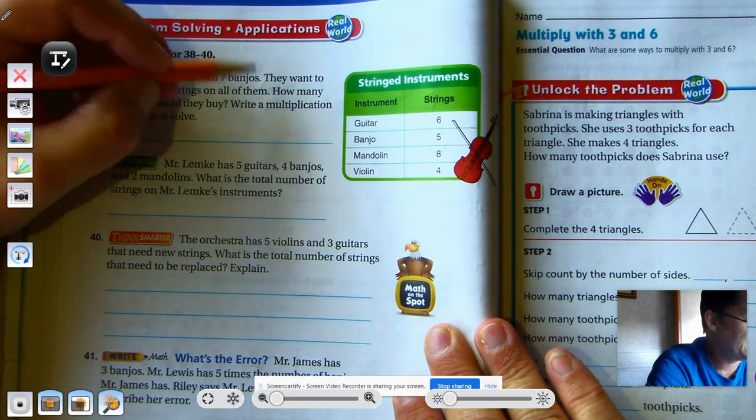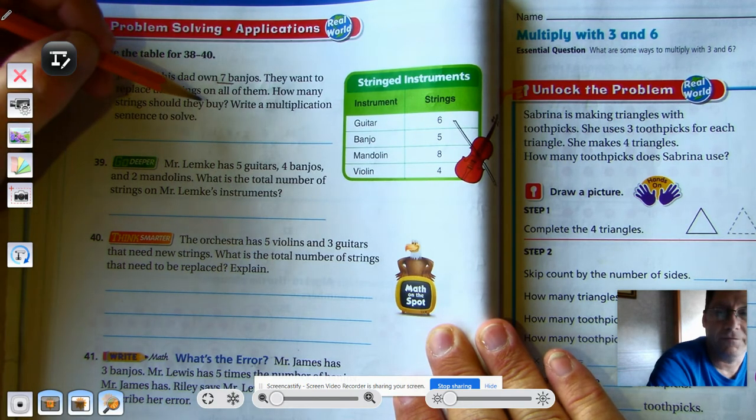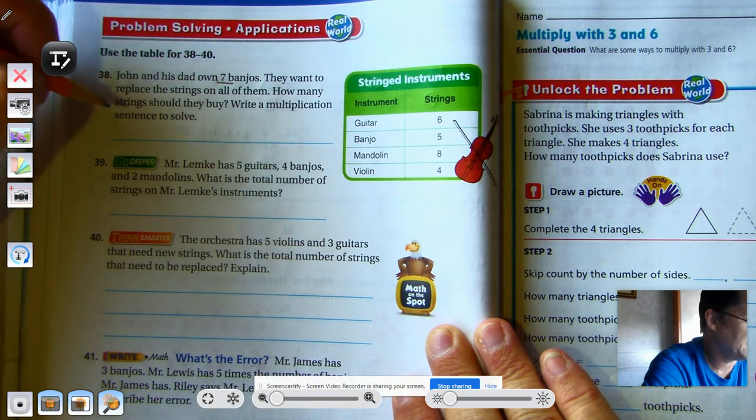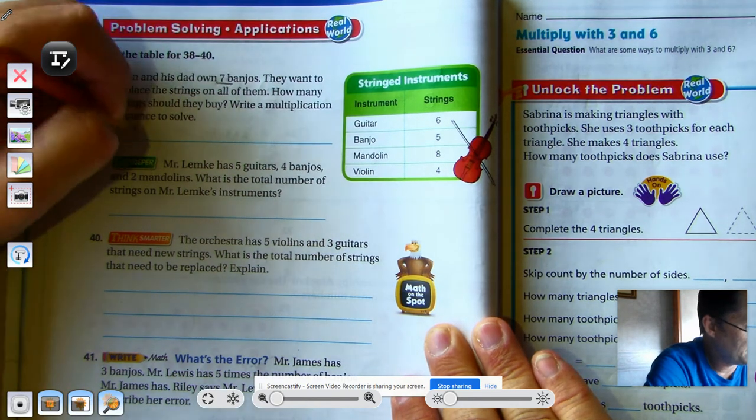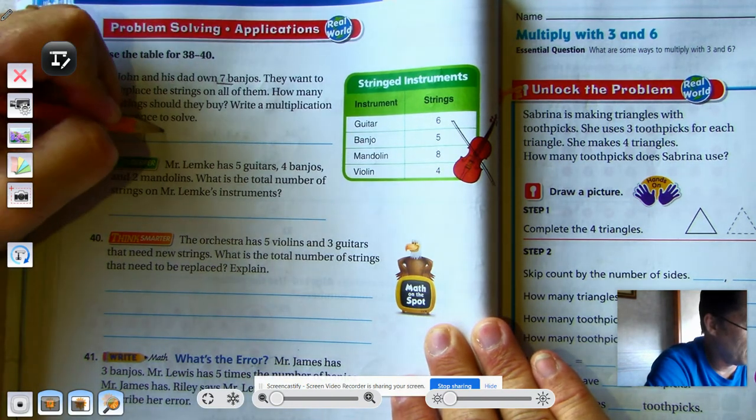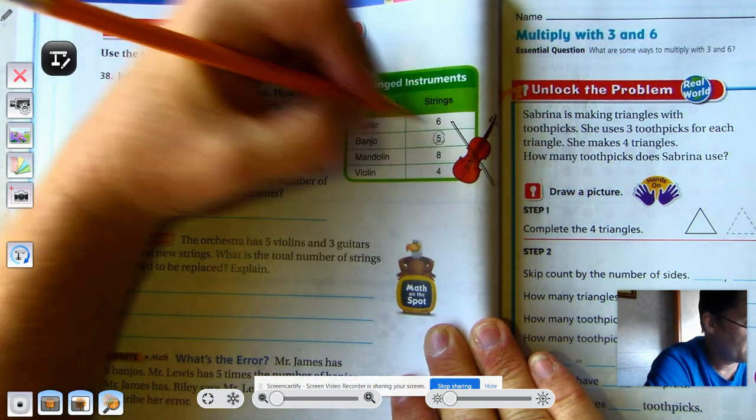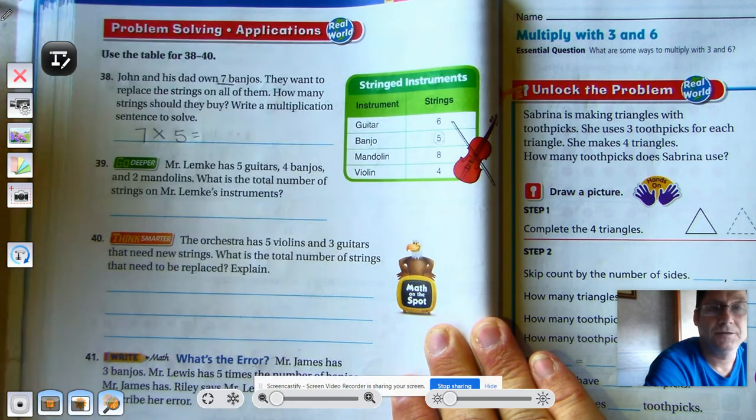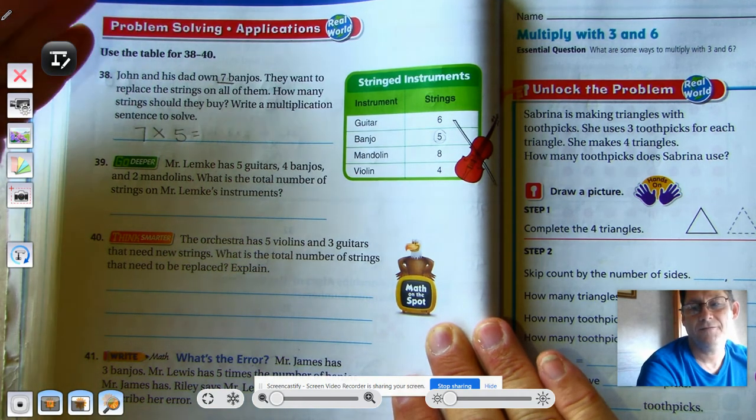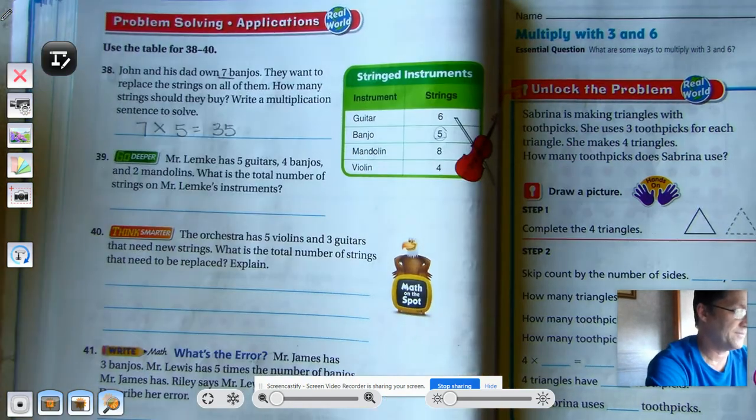So, John and his dad own 7 banjos. They want to replace the strings on all of them. How many strings should they buy? Write a multiplication sentence to solve. So, they have 7 banjos, and they're going to replace the strings on all of them. So, each banjo has 5 strings. So, 7 sets of 5: 5, 10, 15, 20, 25, 30, 35. So, they're going to need 35 strings.